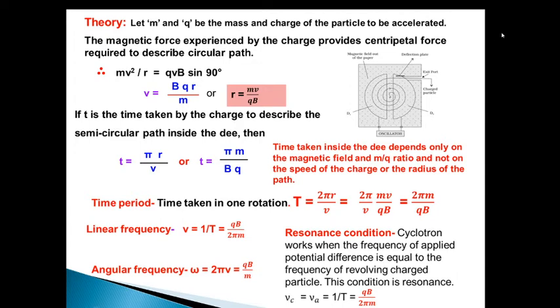Now, if m and q are the mass and charge of the particle to be accelerated, the magnetic force experienced by the charge provides centripetal force required to describe a circular path. Earlier we have seen that if a charged particle moves perpendicular to the magnetic field, it takes a circular path. So the centripetal force is provided by magnetic force. So here we can see mv²/r equals magnetic force, that is qvB sin 90°. Why is it sin 90°? Because the velocity is perpendicular to the magnetic field. So v = qBr/m or r = mv/qB.